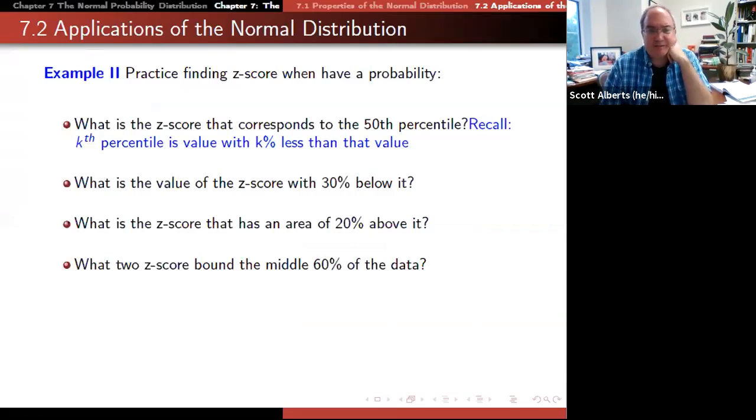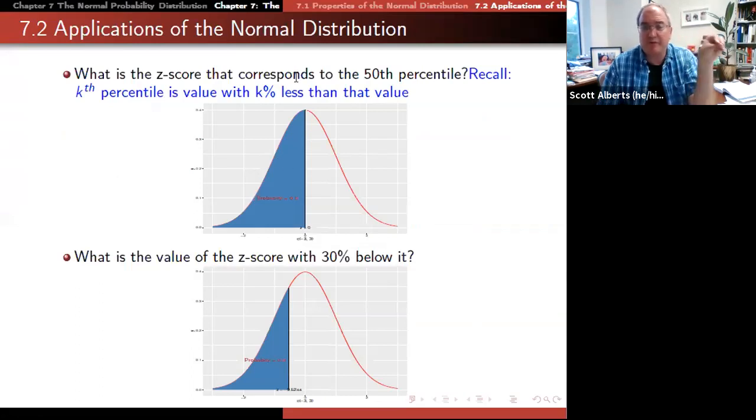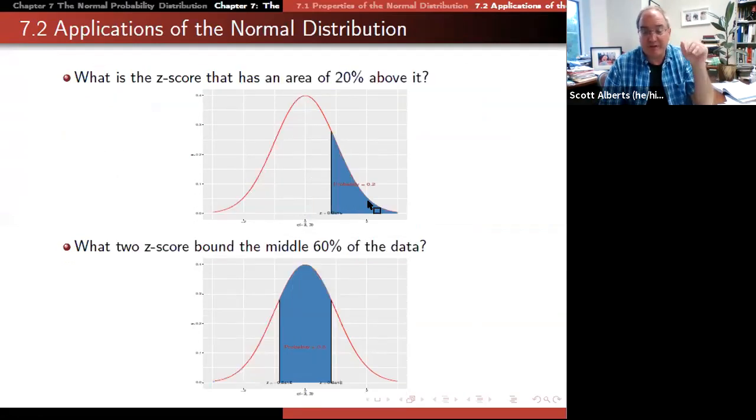Here she has some questions to walk through. What's the z-score that corresponds to the 50th percentile, the 30th percentile, and so on? 20% above it will have a 1 minus that. The middle 60th is going to be a little bit harder, but not really that hard. We can figure that all out with those calculations.